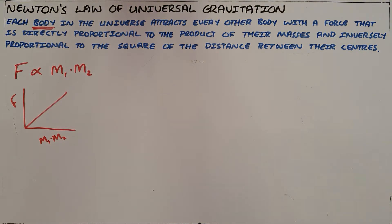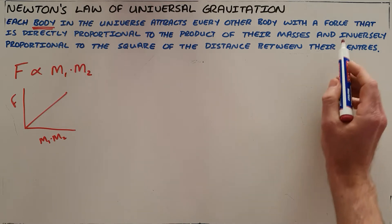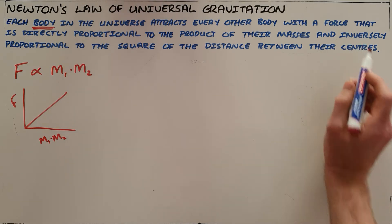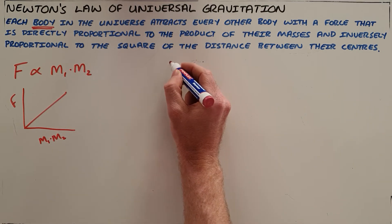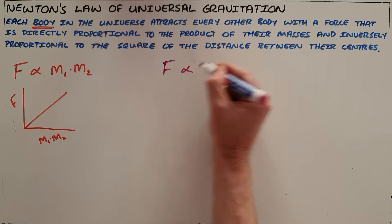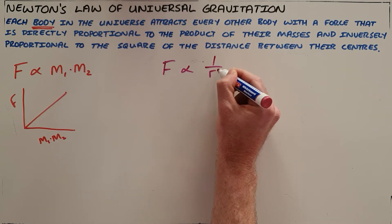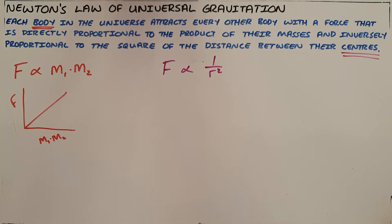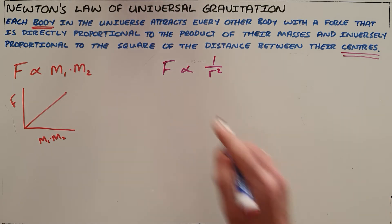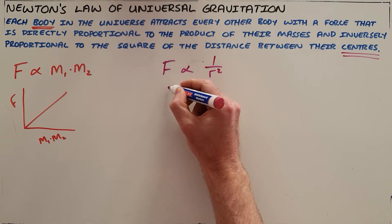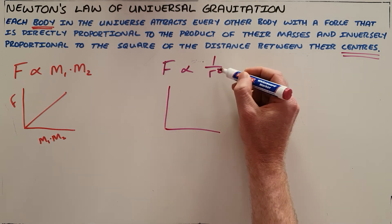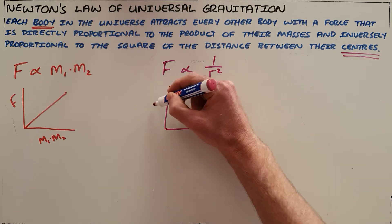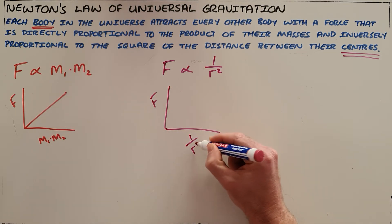The second part of this definition refers to what's called the inverse square law, and says that the force is inversely proportional to the square of the distance between their centers. It is very important to specify that it is the distance between their centers, because this law is often used for very big objects where there is a big difference between the center of an object and the surface of the object. This tells us that F is directly proportional to one over R squared.